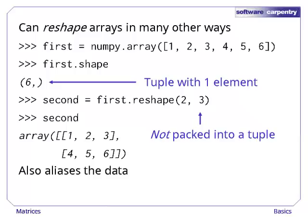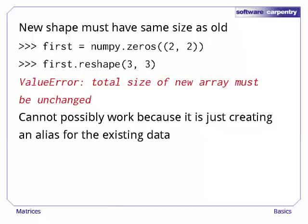There are many other ways to reshape arrays. The most common is unsurprisingly called reshape. Its arguments are the array's new dimensions, not a tuple of those dimensions. Once again, this aliases the data. When we are reshaping, the new shape must have the same size as the original. We cannot add or drop elements.